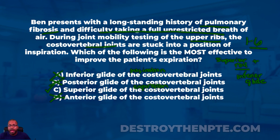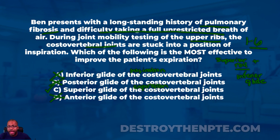Again, with ribs one through six: if a patient is stuck into inspiration, they are stuck into a superior roll and inferior glide. If the question asks you to improve expiration — help the patient expire — that means you need to produce an inferior roll and a superior glide. That's why C is the right answer: superior glide of the costovertebral joint helps the patient with expiration.